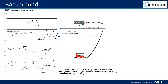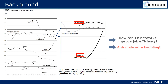Advertising is a primary source of revenue for most TV networks. In Japan, TV ads dominate, but online ads have increased dramatically and threaten the growth of TV ad spending. Due to this, TV networks want to improve job efficiency, and TV ad scheduling automation is a top priority.